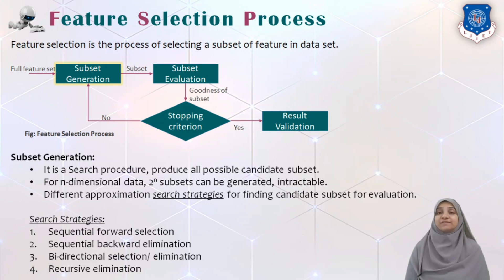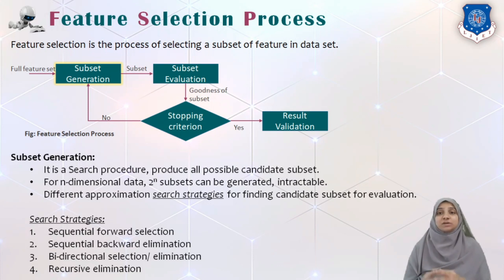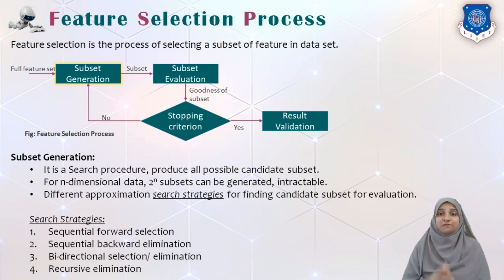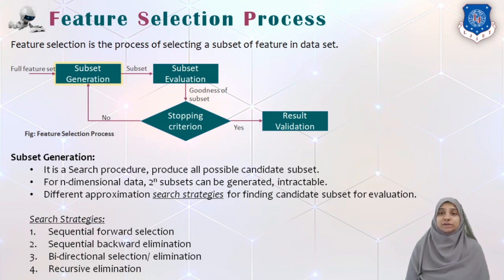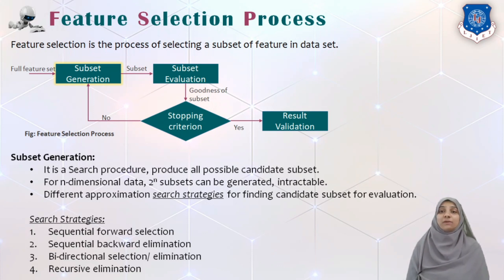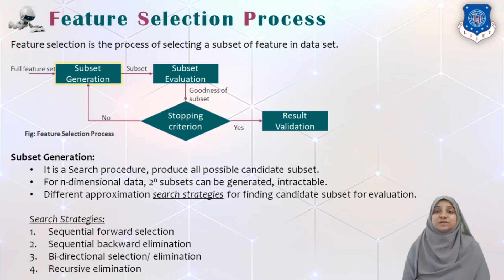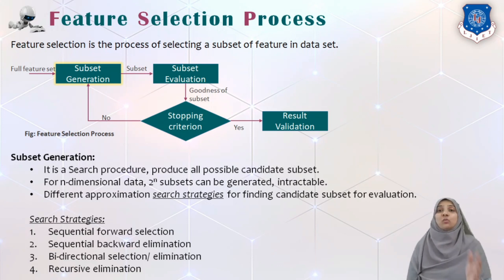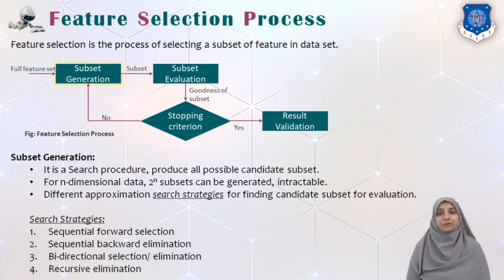Third is bi-directional selection or elimination, where the elimination or selection process is applied on both ends of the feature set. And finally, we have recursive elimination, where we recursively check by eliminating one feature at a time from our final feature set, or recursively add one feature in our feature subset selection process.